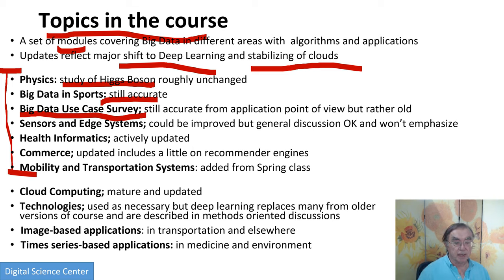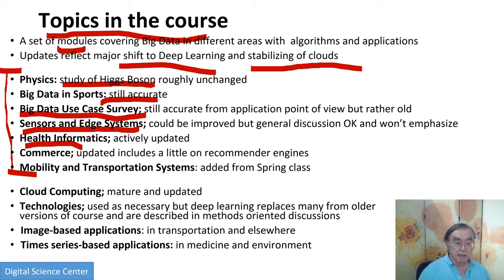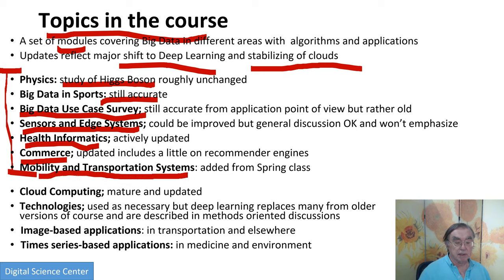Sensors and Edge Systems, or the Internet of Things — this is not my favorite section, but it's a very important topic. I will mention it incidentally during this course but not focus on it as a particular topic. Health informatics, or medical deep learning, is actively progressing with lots of updates, especially due to the coronavirus, and we will certainly cover that. Another area highlighted by the coronavirus is commerce, where the e-commerce part has significantly increased in use. Transportation systems have perhaps been set back by the coronavirus — you don't have quite as many Uber or Lyft rides as before.